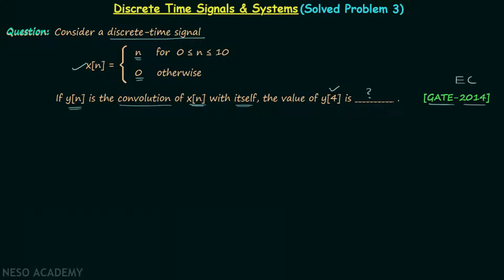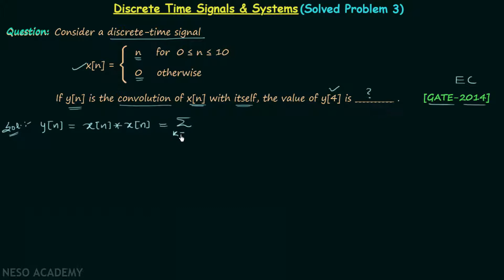The question is straightforward — we simply need to convolve xn with xn to get yn, and once we have yn we will put n equal to 4 to get y4. Signal yn after convolving xn with itself is equal to the summation from k equal to minus infinity to infinity of signal xk multiplied by signal xn minus k.